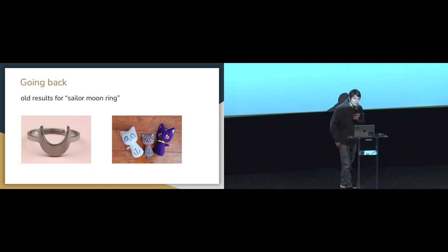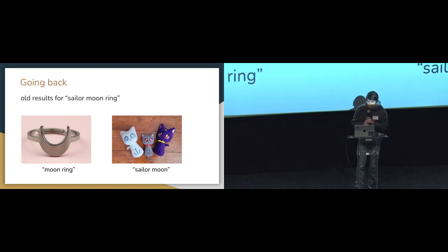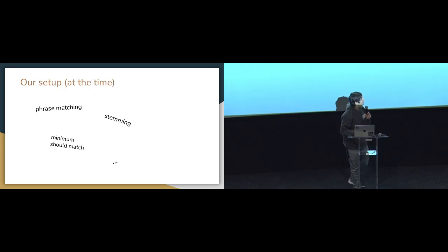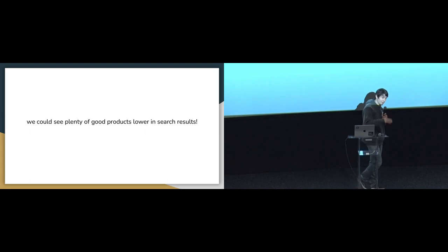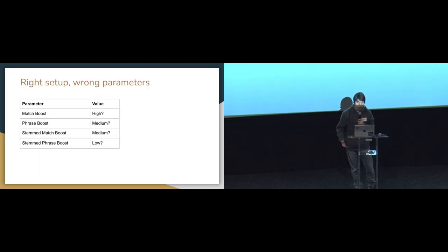Going back in time, the results weren't always so good. Here are search results for 'Sailor Moon Ring' — if you don't know, it's a TV show. The product title was just 'moon ring' — that's not actually anything to do with the TV show — and then other product types. All these wonderful strategies were in place, but they just weren't mixing together correctly. Do we need to add new features? Looking down in the results, there were plenty of great results that could have been surfaced. That's a hint you need to rebalance your weights. Right setup, wrong parameters — that's the situation we were in.